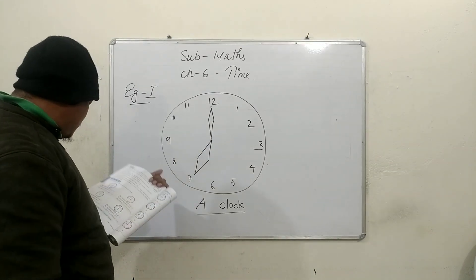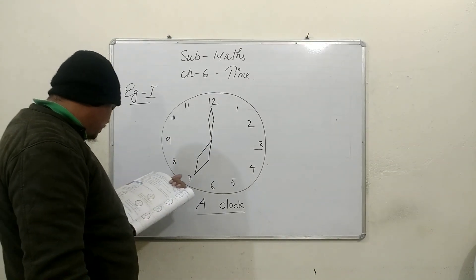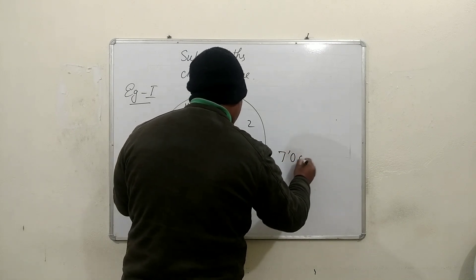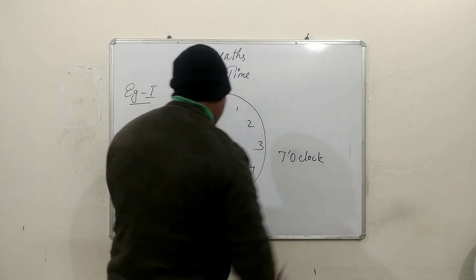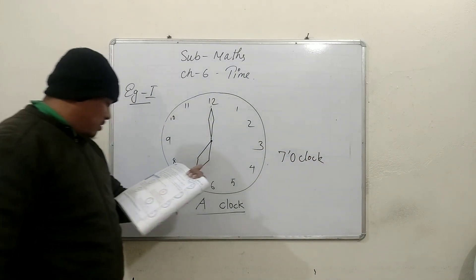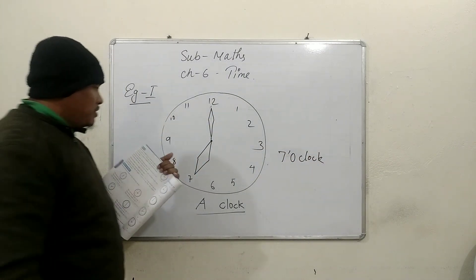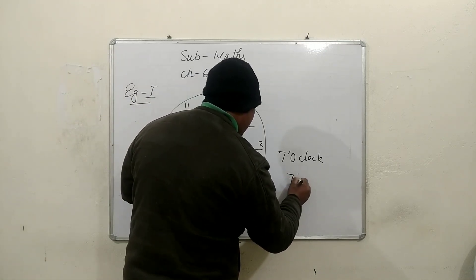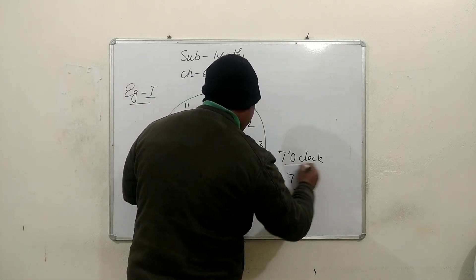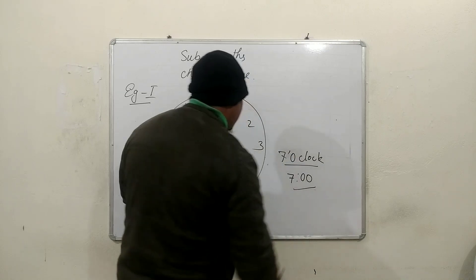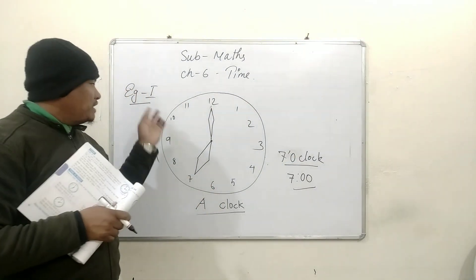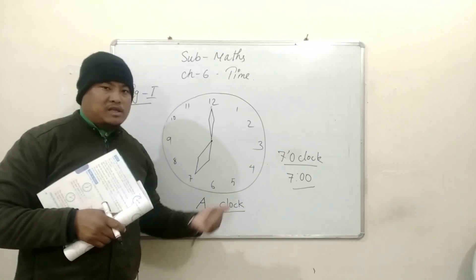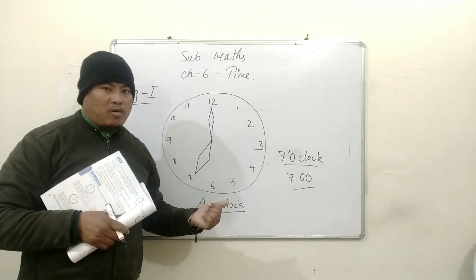In example 1, the hour hand is exactly on 7 and the minute hand is exactly on 12. So children, the time is 7 o'clock. We can also write 7 o'clock in this form.